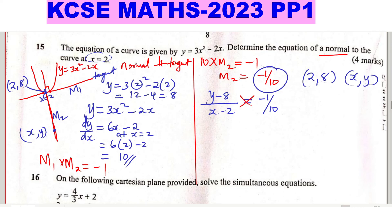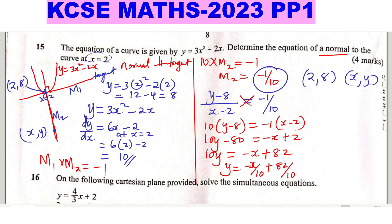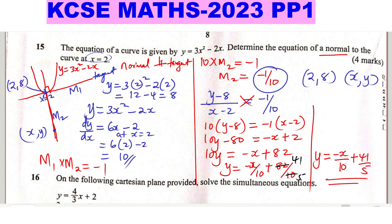From 10y minus 80 equals negative x plus 2, add 80 to both sides: 10y equals negative x plus 82. Dividing everything by 10 gives y equals negative x over 10 plus 82 over 10. Simplifying 82 over 10, this can be written as y equals negative x over 10 plus 41 over 5. That is the equation of the normal at x equals 2.